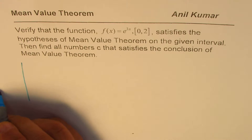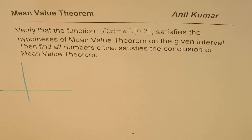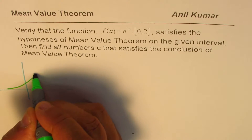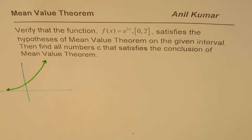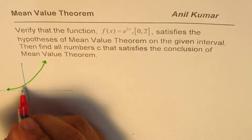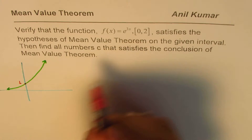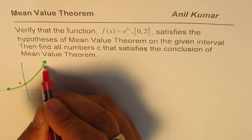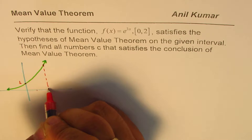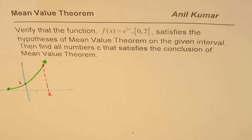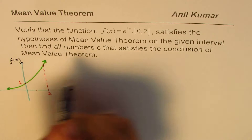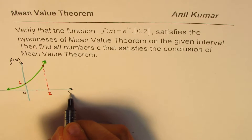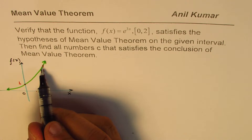To begin with, let me sketch the exponential function approximately — just a very rough sketch. Any exponential function with a positive exponent will look like this. At x = 0, the value will be 1, and at x = 2 we mark that point on the x-axis. So we have f(x) = e^(3x), which is a continuously growing function as shown.